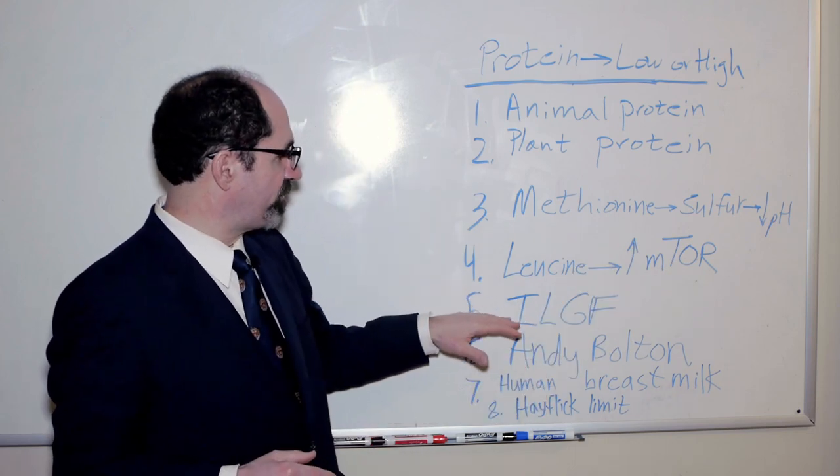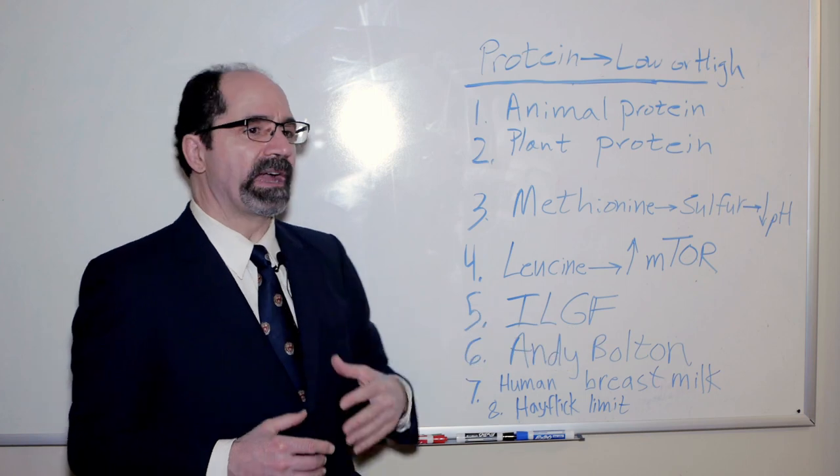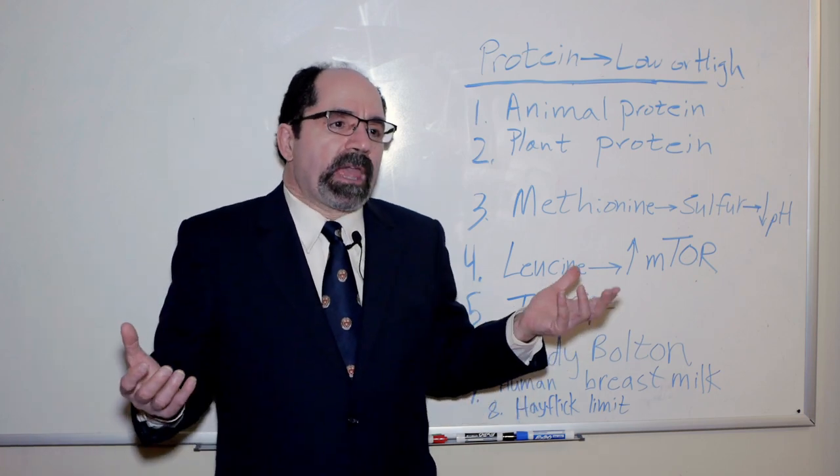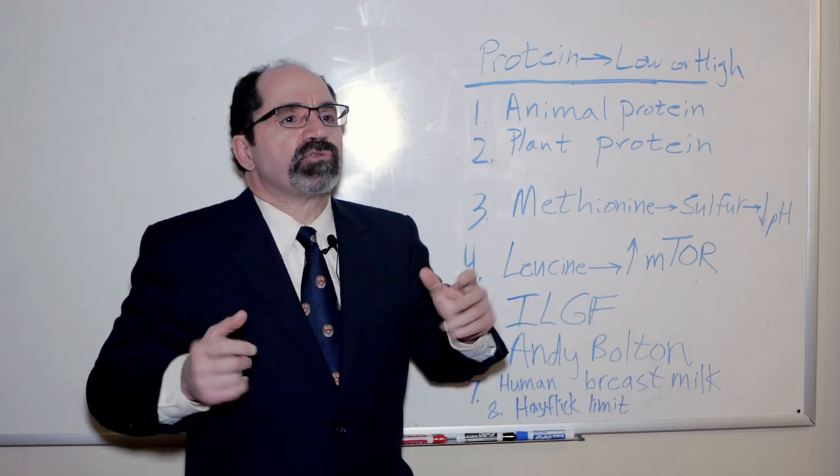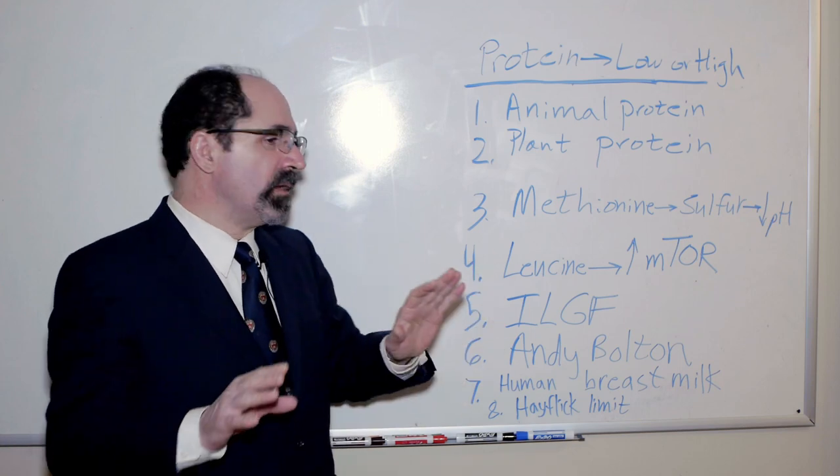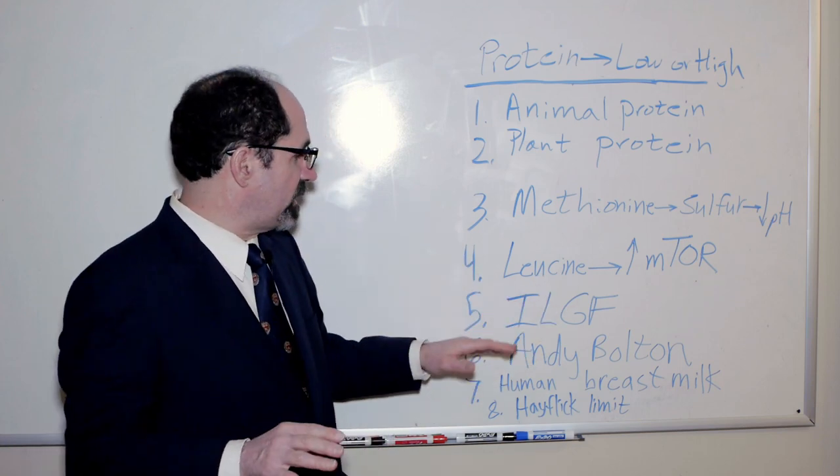In addition, animal protein will have more of an effect to increase insulin-like growth factor. These growth-promoting things, again, might be good if you're trying to get bigger, stronger, faster as a 20-year-old athlete. But after 40, when you're scared of cancer, I think it's a bad idea.